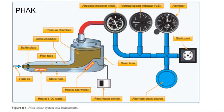So why is the static air needed? Well, remember as you climb the air becomes less dense. So if there wasn't a calibration for lower air pressure at altitude, the airspeed indicator could read lower as you climbed due to less impact air. You can see the altimeter and the VSI do not use ram air, only static air.